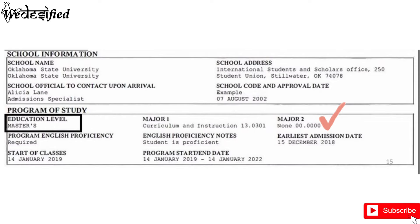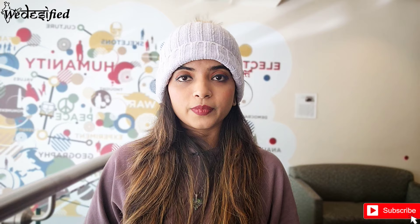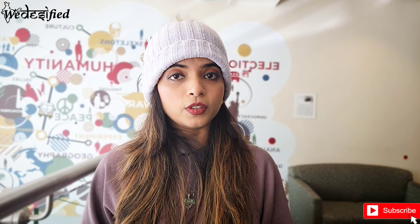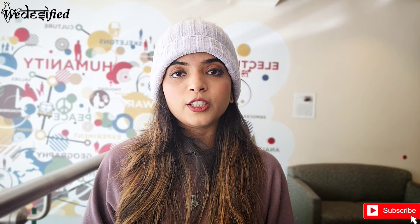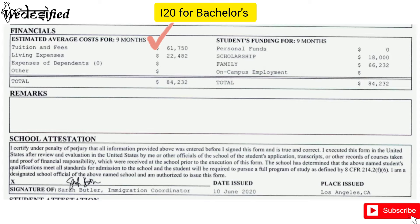Also verify the program start and end dates. The start date determines when you can apply for your visa, which is 120 days earlier, and the earliest admission date tells you when you can enter the United States, which is 30 days before the start date. The end date is usually an estimate of your last day of classes, and you are eligible to do OPT after that. If your estimated end date changes in the future, you can get it updated. For undergrad students it should be around four years, for graduate students around two to two and a half years, and for PhD students about six years.